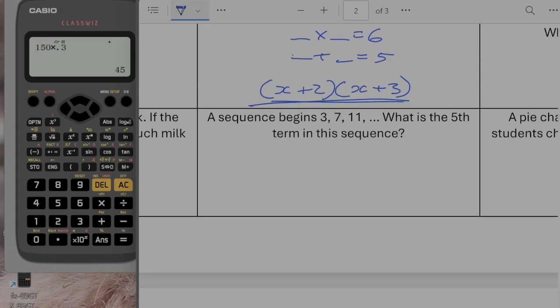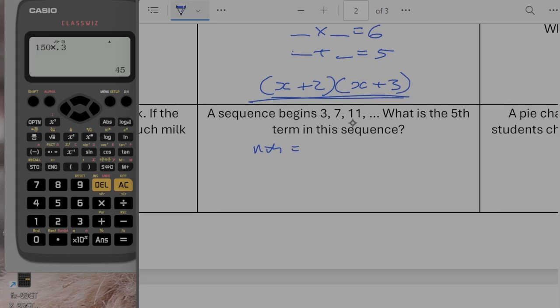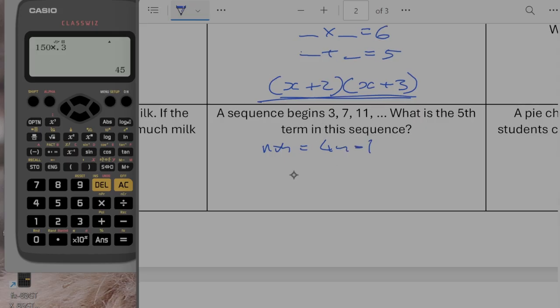A sequence begins 3, 7, 11. What is the fifth term of the sequence? So we could carry this up. I'm just going to do it slightly differently though. I'm going to say that the nth term is going to be equal to, common difference is 4, so 4n. And then to 4 I would need to minus 1 to get to 3. So that's my nth term. So the fifth term is going to be equal to 4 times 5 minus 1, which is going to give us 19.